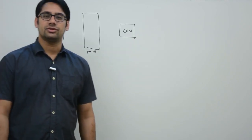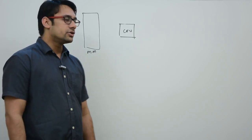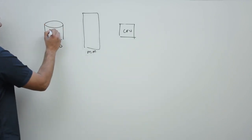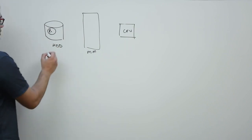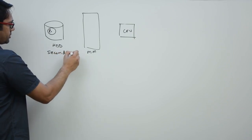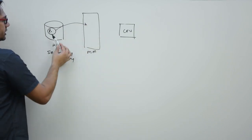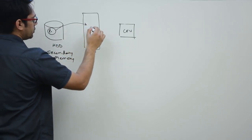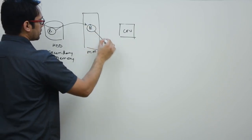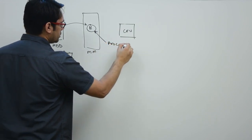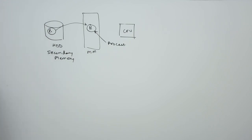I'm not showing cache memory and registers here because right now my main aim is to show you what a process is. When you write a program, that program resides in secondary memory. When you execute this program, you take it from secondary memory and bring it to main memory — and now it becomes a process.